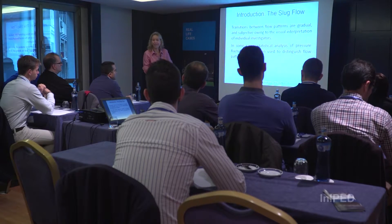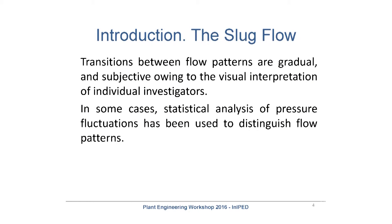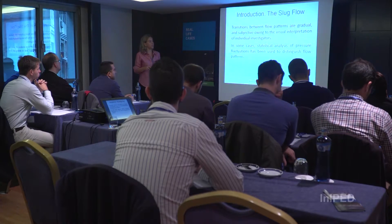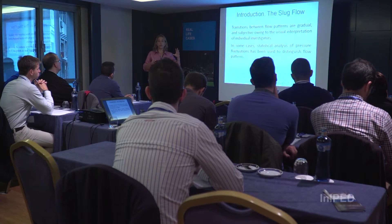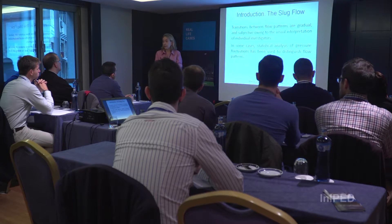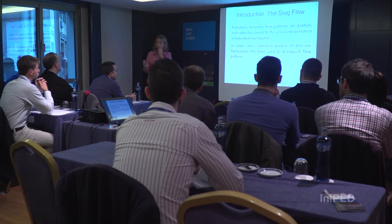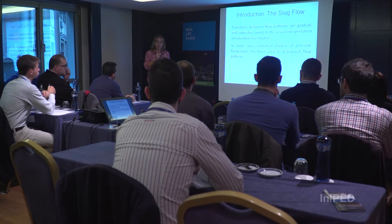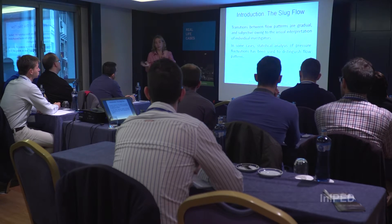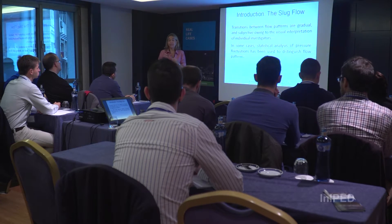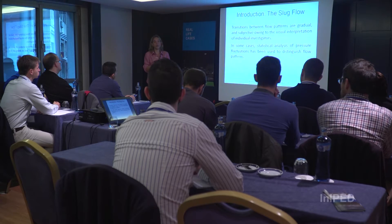Since I'm not from the process department, I'll give you a very brief concept of slug flow — just so those who are not familiar with it have an easy understanding of what it means. The problem is that when we have all these changes in pressure, the flow pattern can generate different patterns — not only slug flow. So it's very difficult for the process department to identify exactly which pattern of flow they have, especially the conditions of velocity, density of liquid, density of gas, and the proportion of gas and liquid in the pipe.